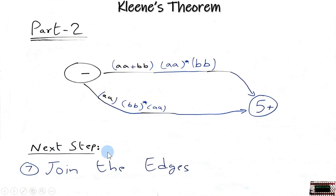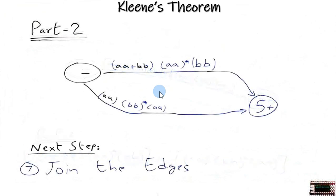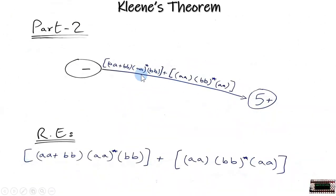So to join the edges we would put the plus symbol between them which is the OR symbol. These two expressions have gone inside the large brackets. So this is our final transition graph and this can be written as a regular expression which is the proof of Kleene's theorem part 2.